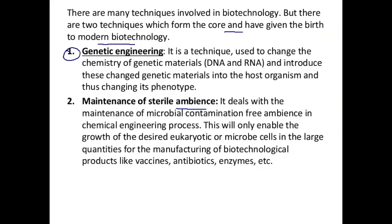Genetic engineering is a technique used to change the chemistry of genetic material — DNA and RNA — and introduce this changed genetic material into a host organism, thus changing its phenotype, meaning the appearance or structure of animals or plants is completely changed by manipulating the gene. Maintenance of sterile ambience deals with maintaining a microbial contamination-free environment. In chemical engineering processes, this enables the growth of desired eukaryotic or microbial cells in large quantities for manufacturing biotechnological products like vaccines, antibiotics, and enzymes.